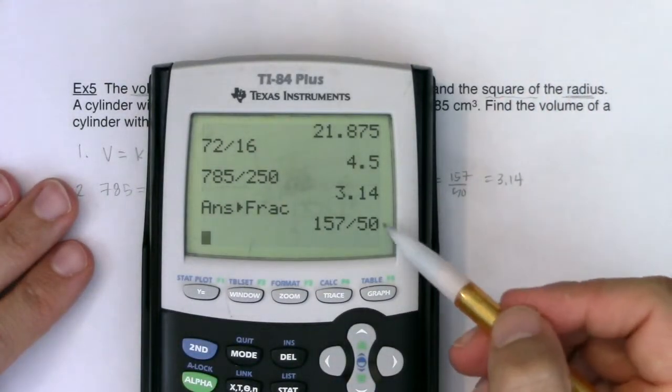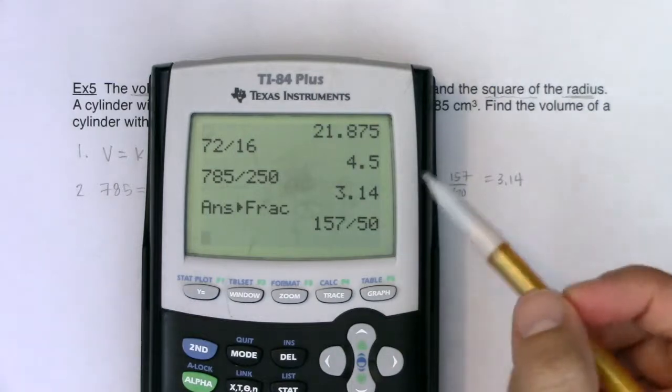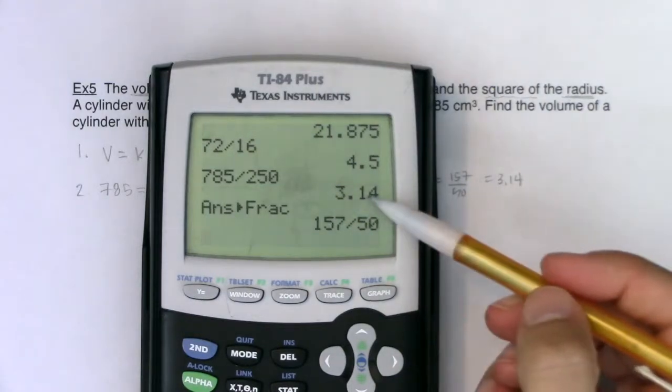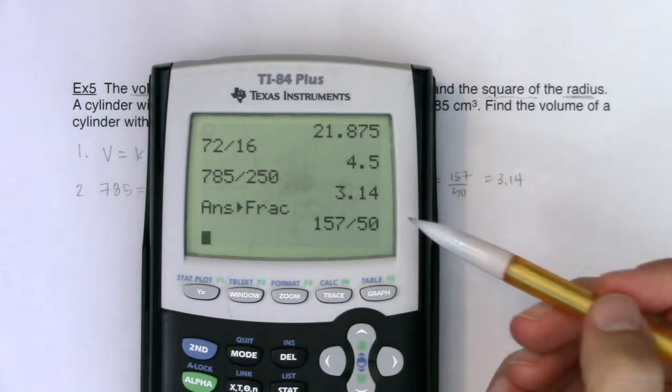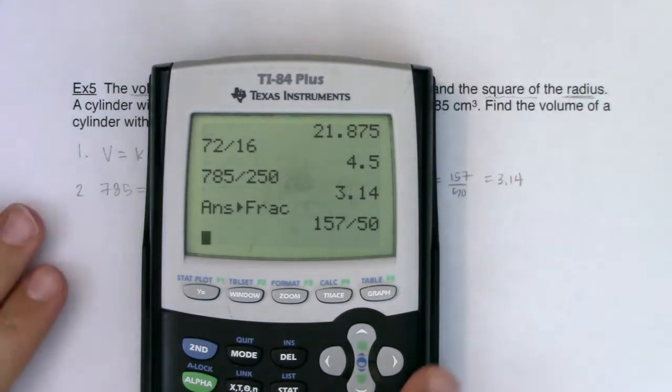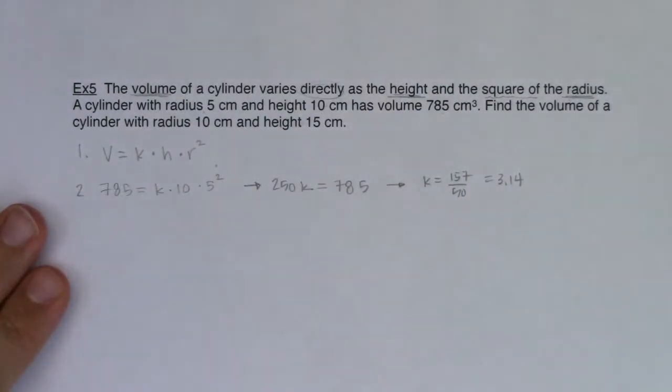Either one is fine. I usually go with fractions, especially when decimals are non-repeating and just keep on going. This decimal actually ends. It's just 3.14. So really, either answer is going to give you the exact same result.